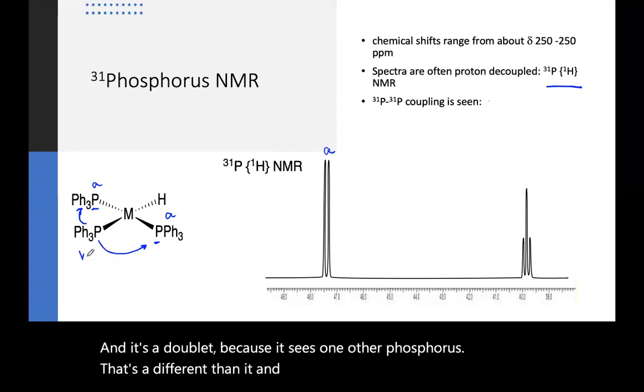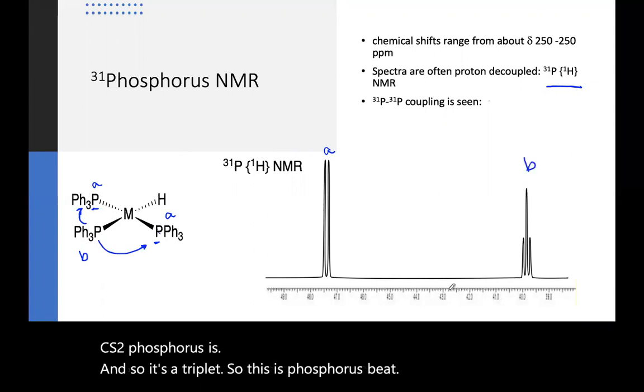So if we call this A, this is A, and it's a doublet because it sees one other phosphorus that's different than it, and n+1. This one, B, sees two phosphoruses, and so it's a triplet. So this is phosphorus B.